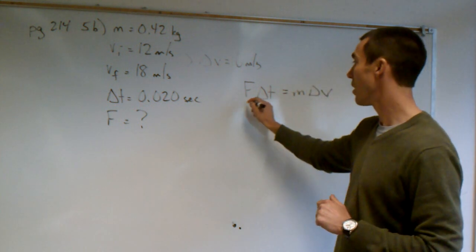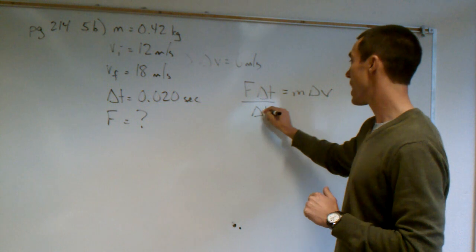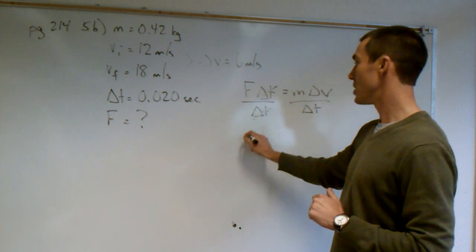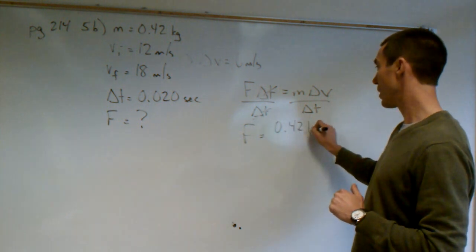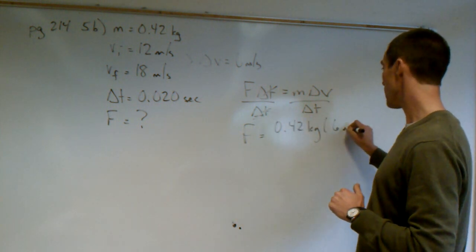You get the force by itself. We divide both sides by time. We put the numbers in and we solve the question: 0.42 kilograms times 6 meters per second.